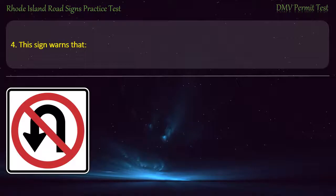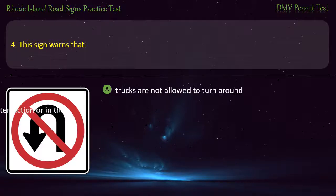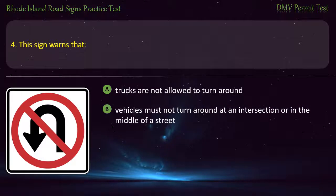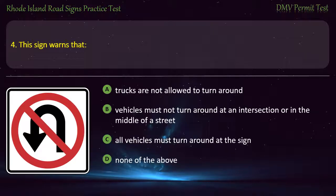Question 4. This sign warns that: trucks are not allowed to turn around; vehicles must not turn around at an intersection or in the middle of a street; all vehicles must turn around at the sign; none of the above. Answer: Vehicles must not turn around at an intersection or in the middle of a street.